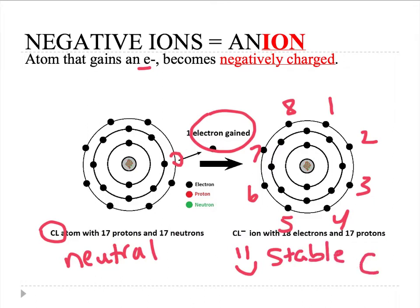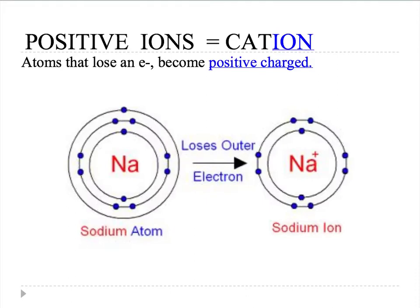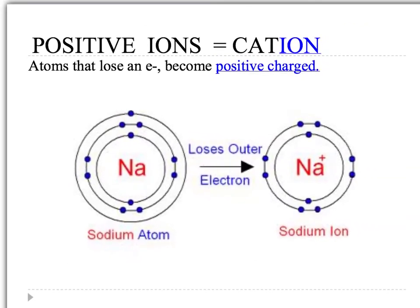Atoms can also lose an electron. In this case, we have sodium, and sodium needs to get rid of that extra electron in order to be more stable. So it loses its outer electron and becomes a charged particle — a charged atom, or a charged ion — and it's a positive ion in this case.